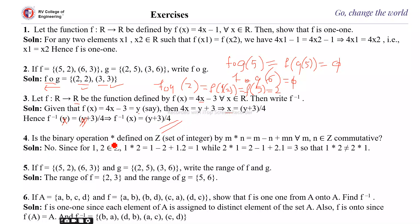Is the binary operation defined on ℤ by m★n = m − n + mn for all m,n in ℤ commutative? The answer is no. For example, 1★2 = 1 − 2 + 1×2 = 1, whereas 2★1 = 2 − 1 + 2×1 = 3. Since 1★2 ≠ 2★1, the operation is not commutative.